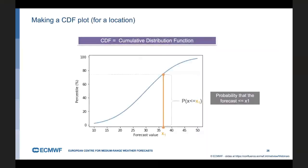Closely related to the percentiles are the CDF plots for a given location. So CDF stands for cumulative distribution function and this plot just illustrates what it means for an actual ensemble forecast. So on the X axis, we have the forecast value range and for a given forecast value X1, the curve gives us the probability that the forecast is less than or equal to X1.